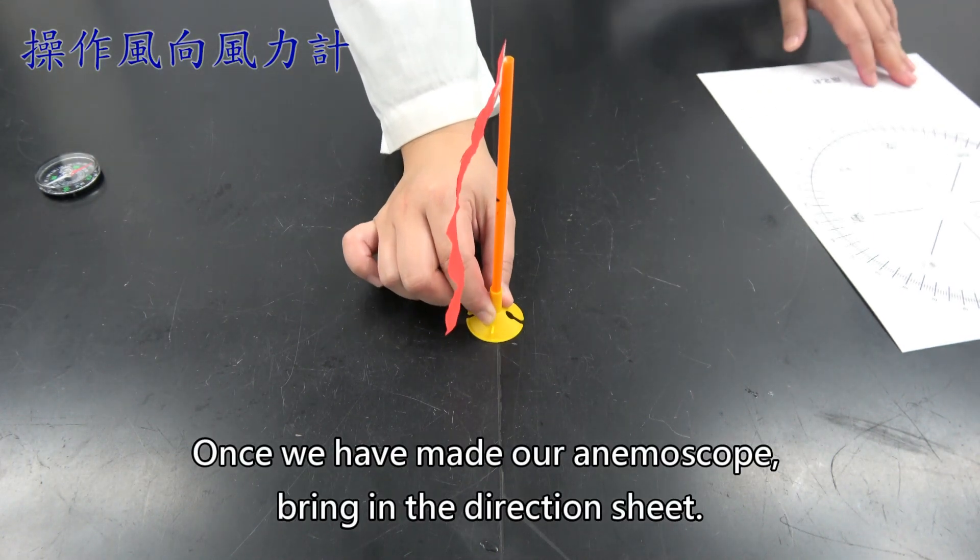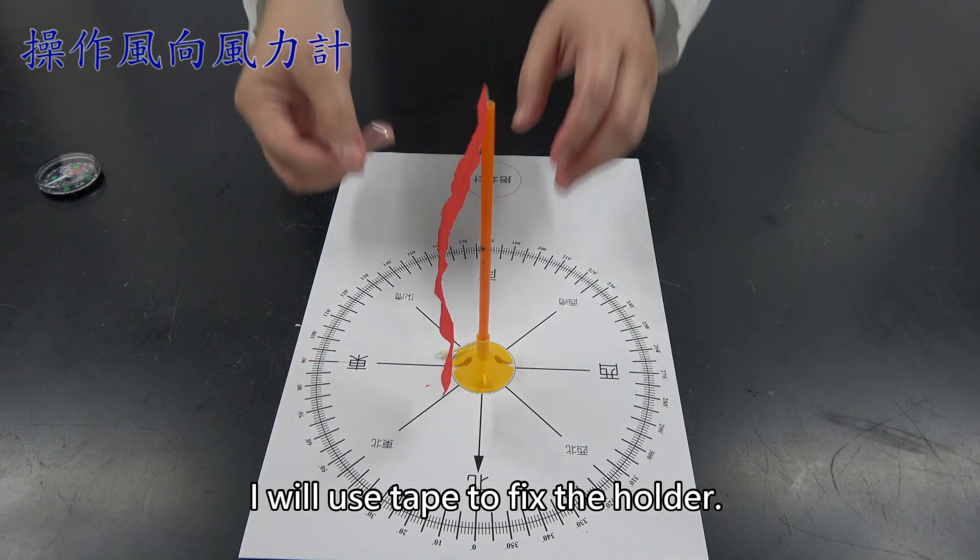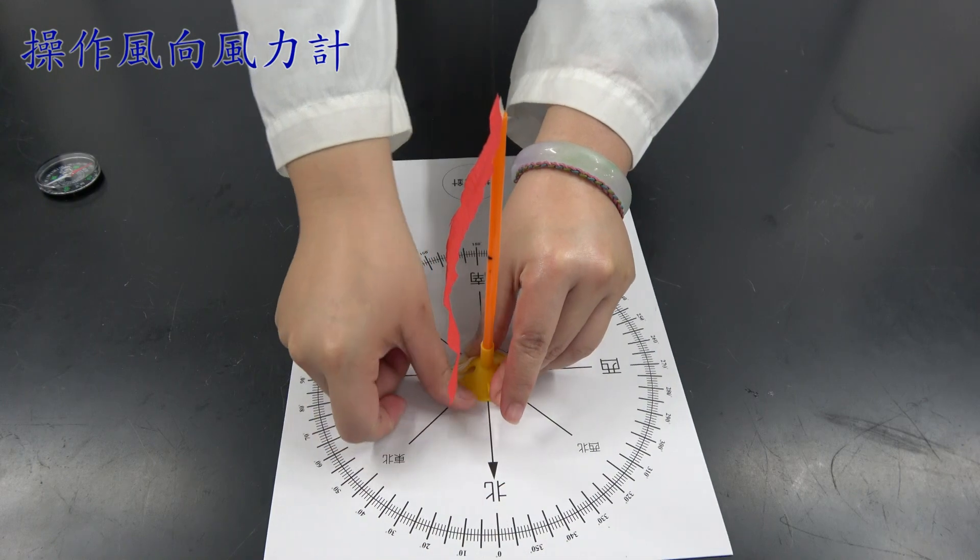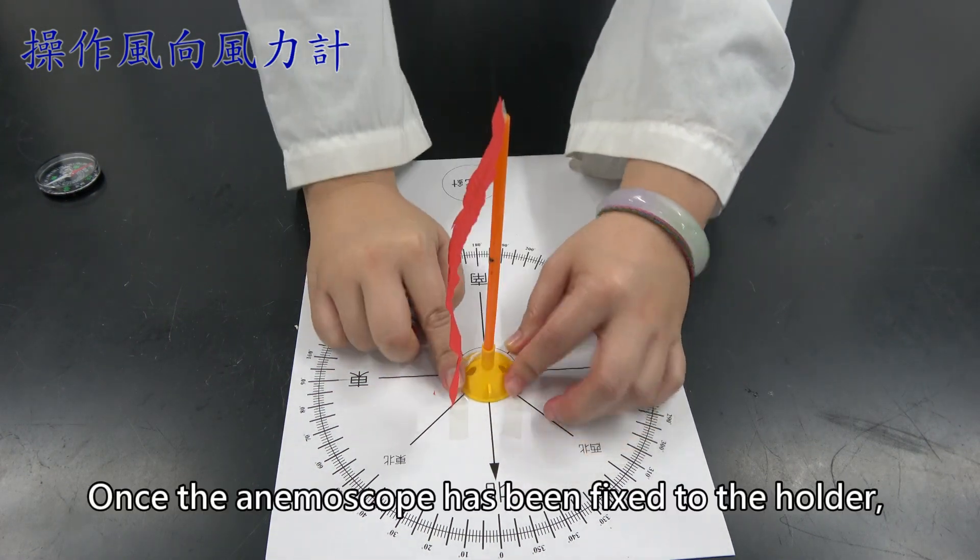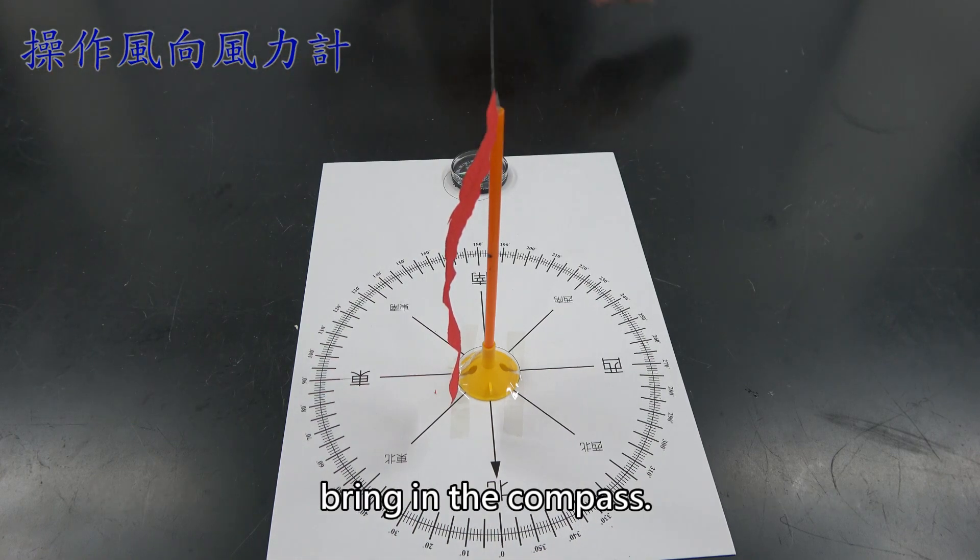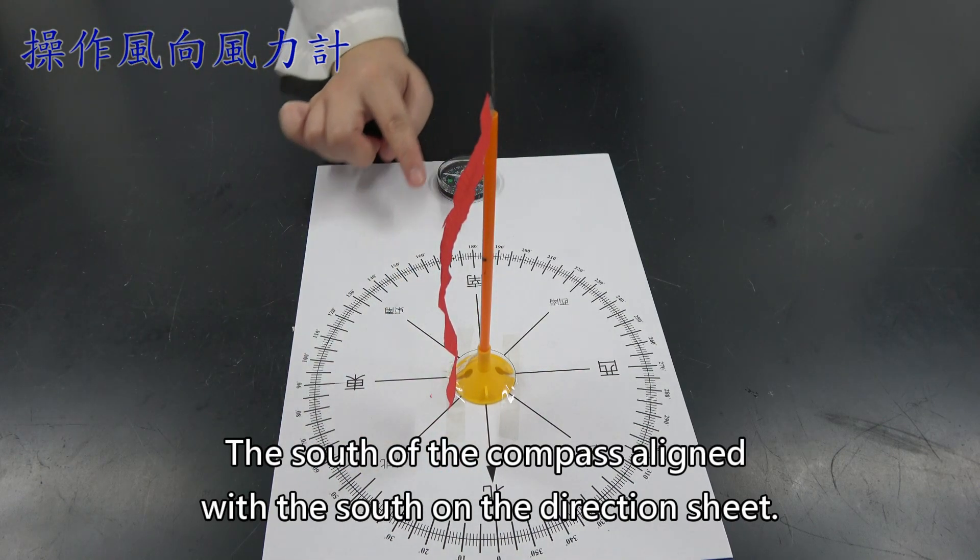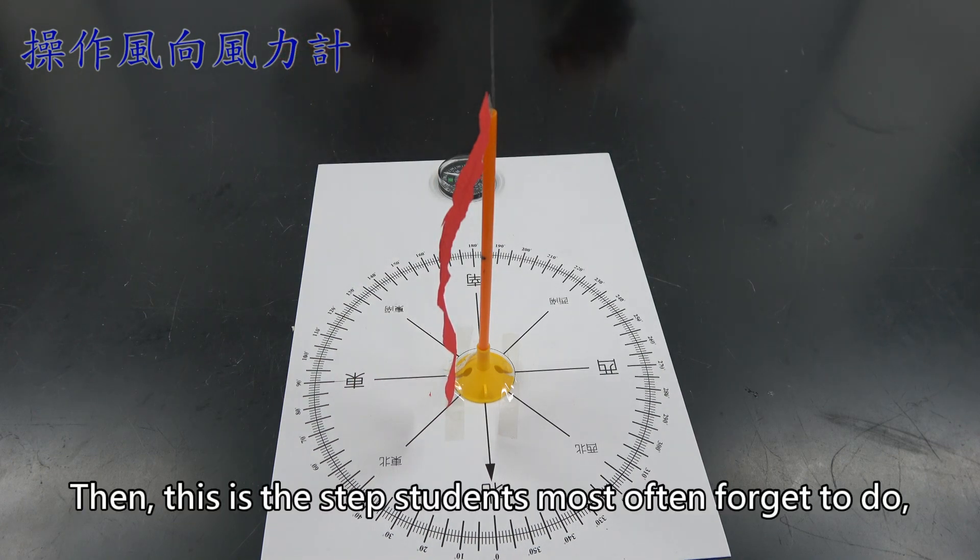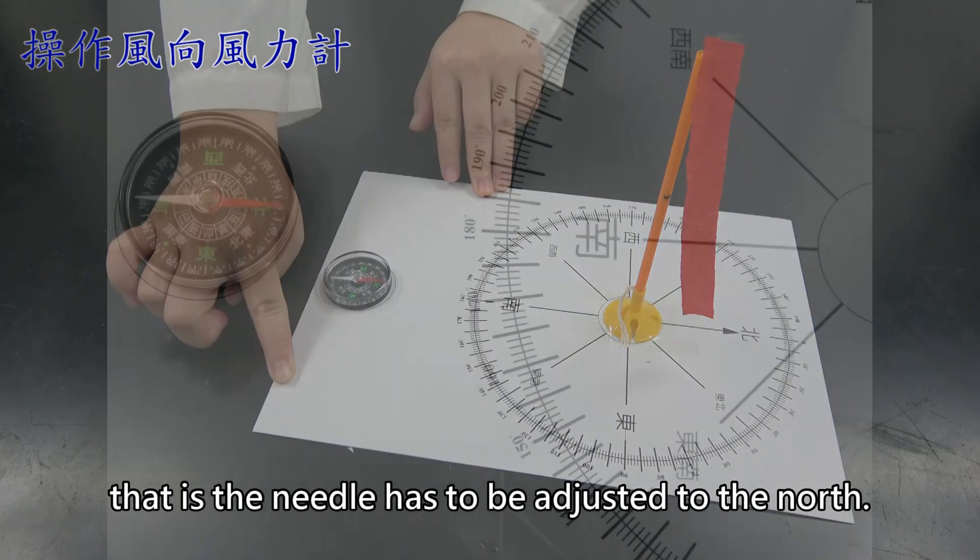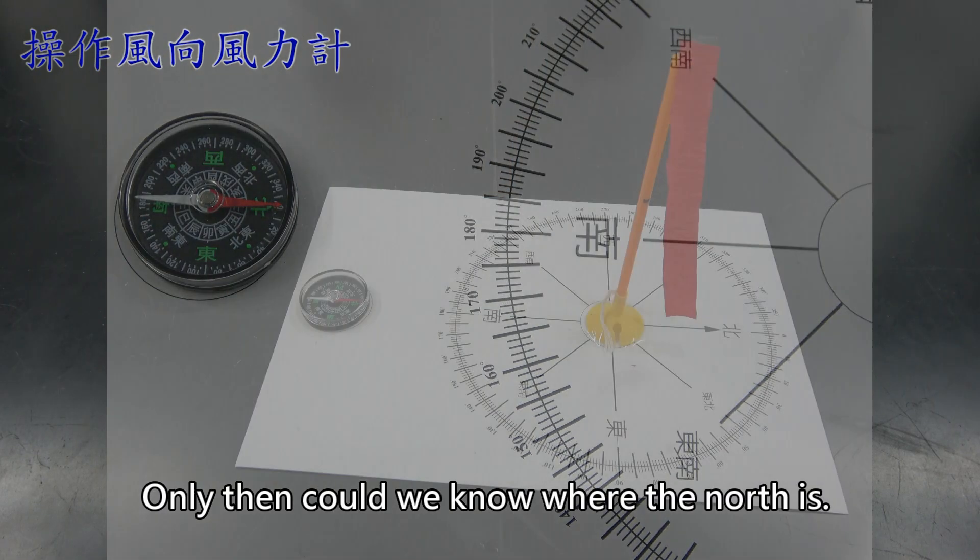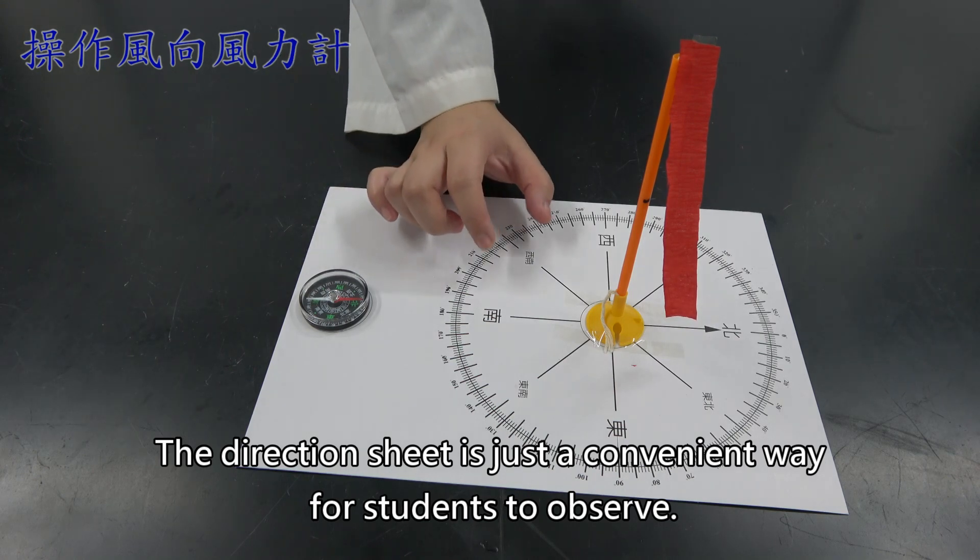Once we have made our anemoscope, bring in the direction sheet. Once the direction sheet is set, fix the holder. I will use tape to fix the holder. Once the anemoscope has been fixed to the holder, bring in the compass. We have to align the north of the compass with the north on the direction sheet. The south of the compass aligned with the south on the direction sheet. Then, this is the step students most often forget to do. That is the middle has to be adjusted to the north. Only then could we know where the north is.